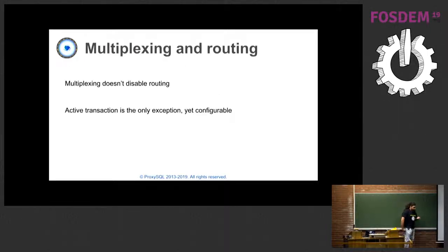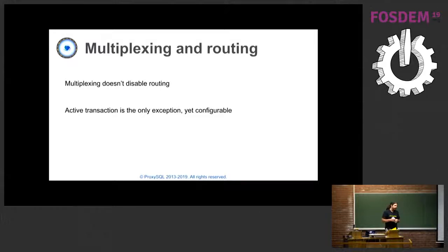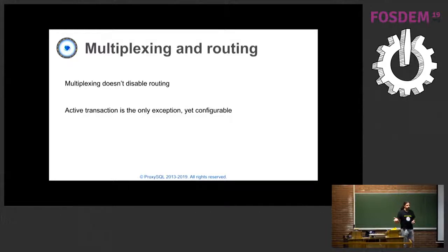One important thing to remember is that multiplexing does not automatically disable routing - those are two different concepts. So you can have multiplexing disabled on a specific connection, but still have the client send traffic into multiple connections: one connection to the writer and one connection to the reader. Or if you have sharding, one connection to one shard and another to another shard, with traffic load balanced based on certain criteria.